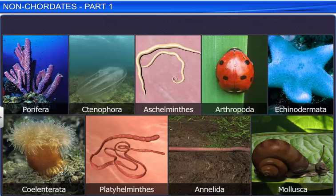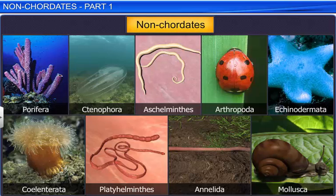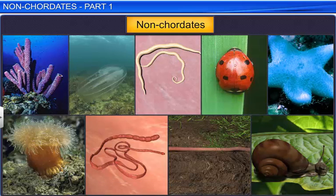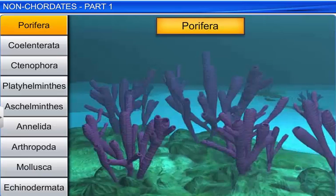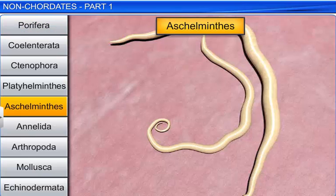Animals belonging from phylum Porifera to phylum Echinodermata are categorized as non-chordates. Non-chordates are animals without a notochord. Let's take a look at the important characteristic features of the phylum Porifera to the phylum Aschelminthes.